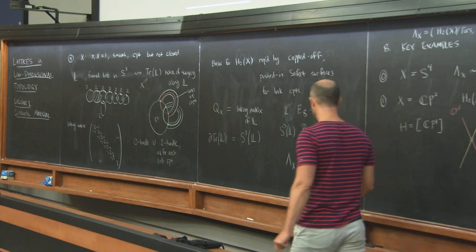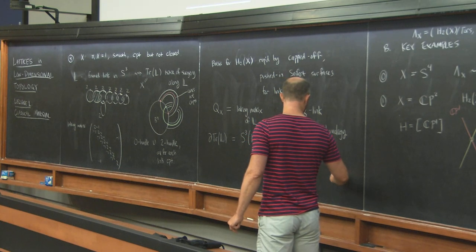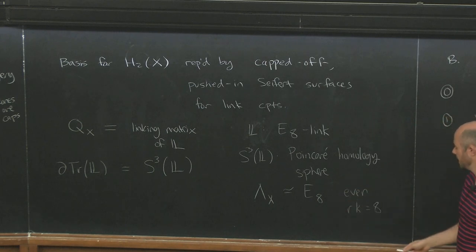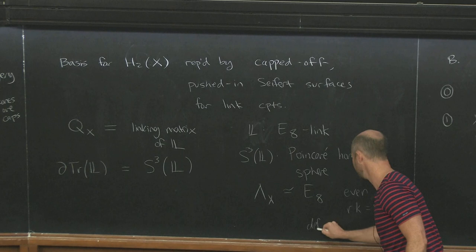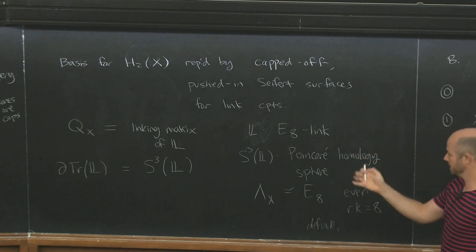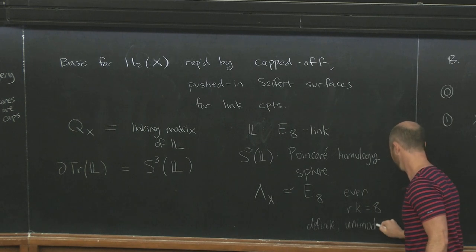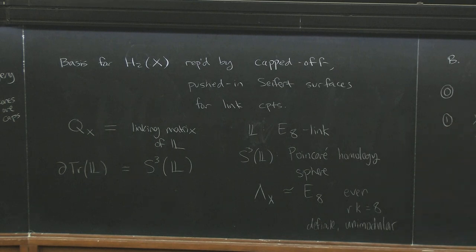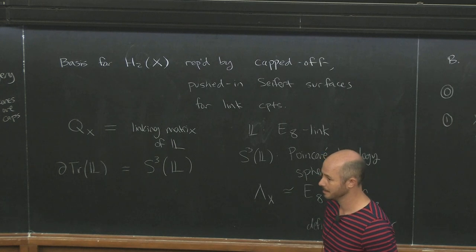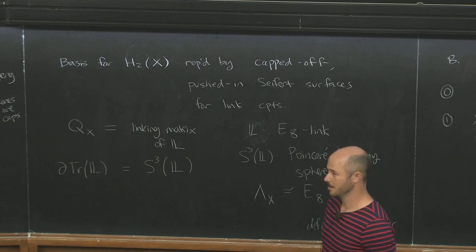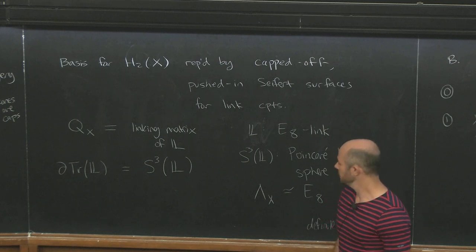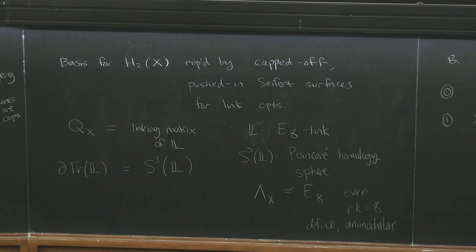That gets into very deep properties about lattices, theta series, modular forms, and quasi-modular forms — topics I'm just giving lip service to in these lectures. But it's a remarkable structure which will recur for us. It's not obvious from how I've written it down, but this matrix is obviously even, obviously has rank 8, and it is indeed a positive definite and unimodular form.